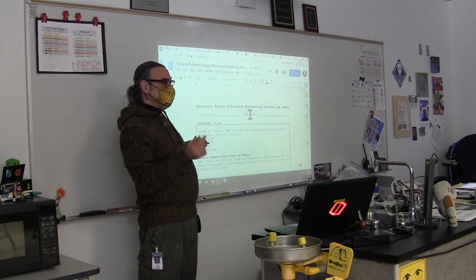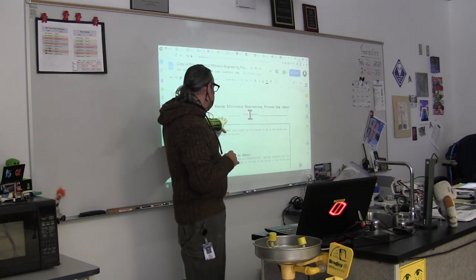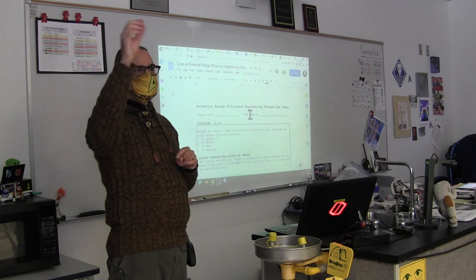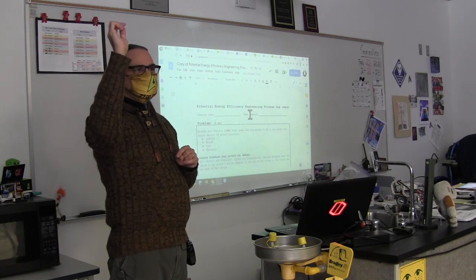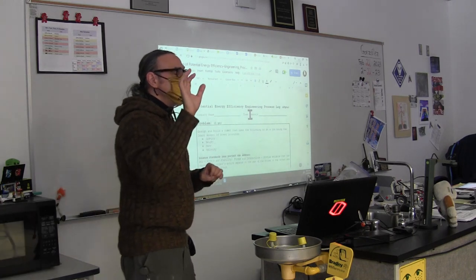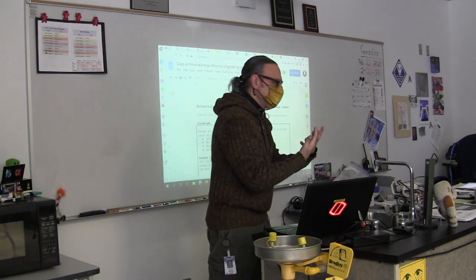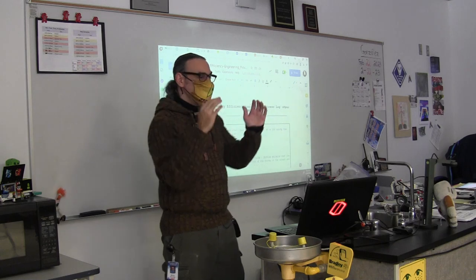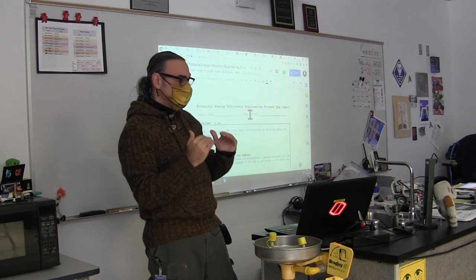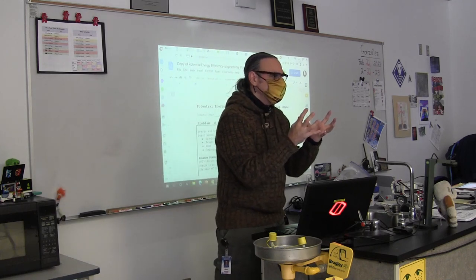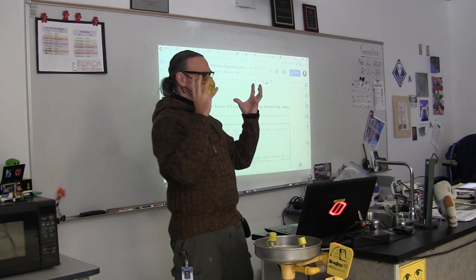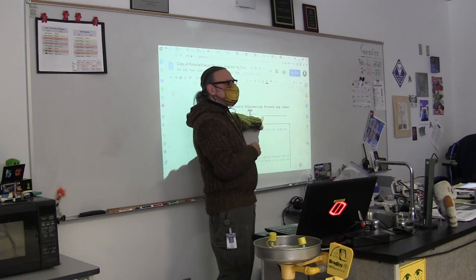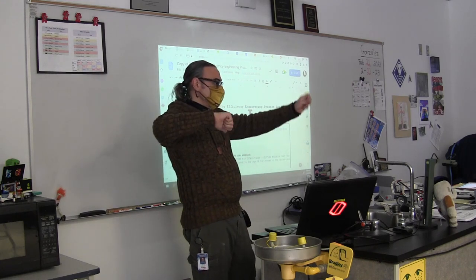I'll show you later how to attach this document to Google Classroom. This starts with a company name — you and your partner are going to come up with a company. Your job is to create something that's going to be more energy efficient. You're an energy efficiency group, so come up with a name that has to do with engineering, energy, physics, or efficiency. Write down your name and your partner's name, or partners if you're a team of three.